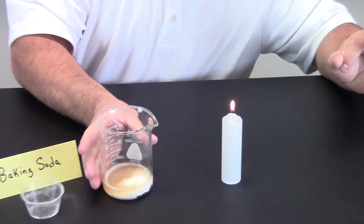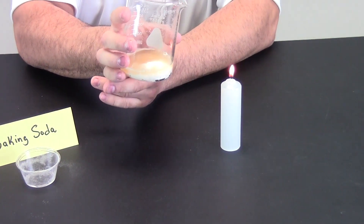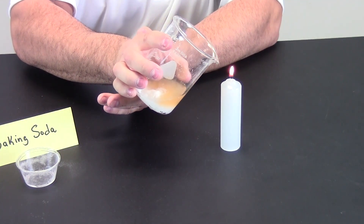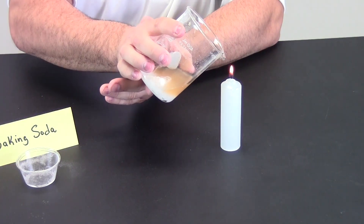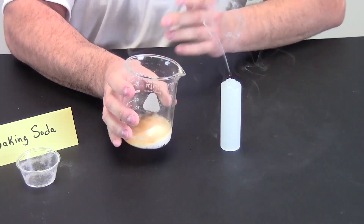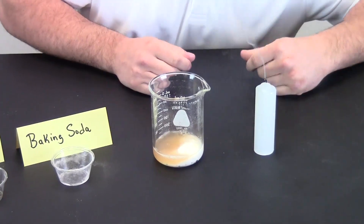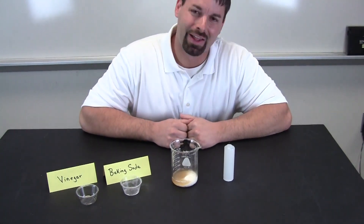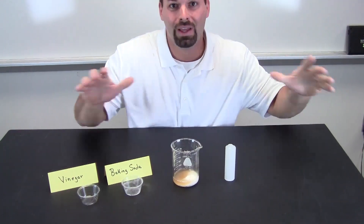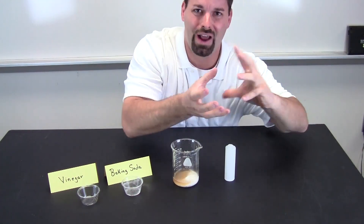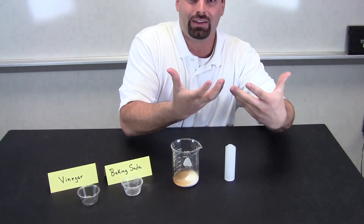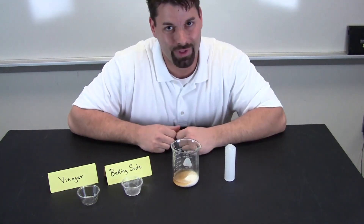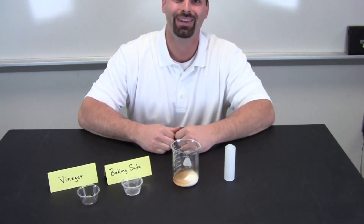This is the cool part. I am not going to pour any of the liquid. I am going to pour the gas out of here onto the flame. Whoa! I did not blow that candle out. The carbon dioxide smothered it. It is kind of like putting an invisible blanket on the flame. Oxygen cannot get to it. All the carbon dioxide swirls around that flame. The candle cannot take any of the oxygen in the air. The carbon dioxide put out the flame. Science is so cool. Thanks for watching.